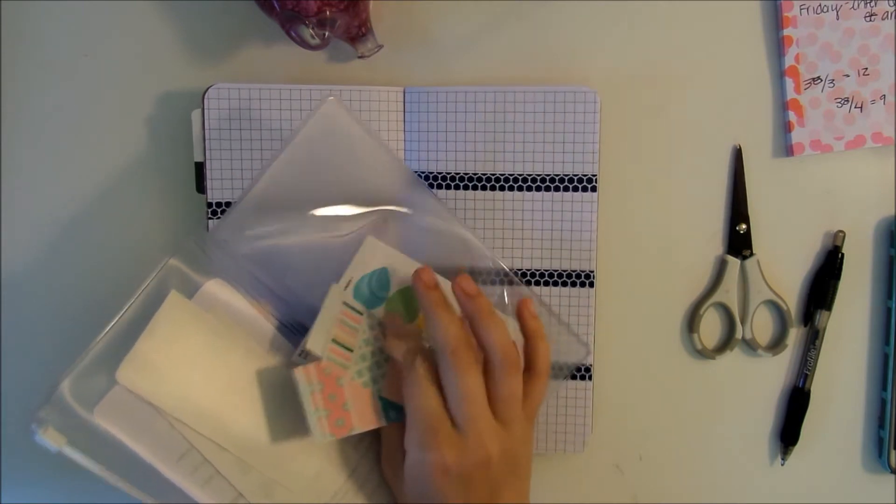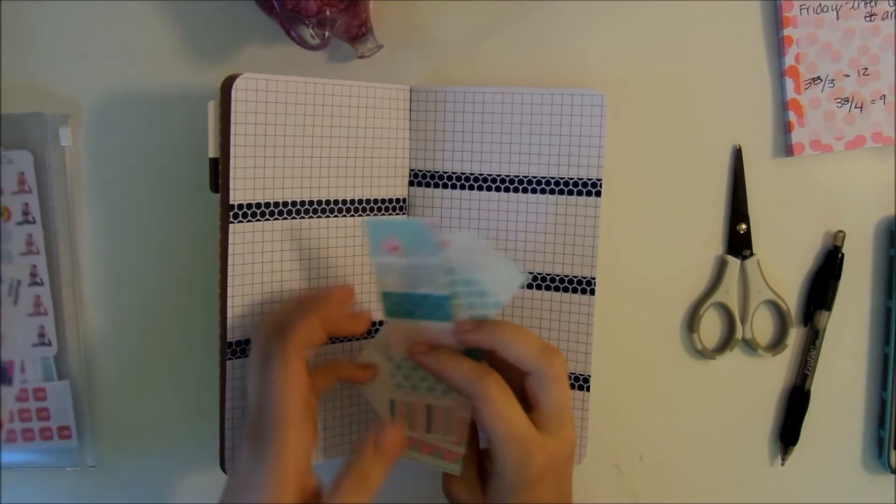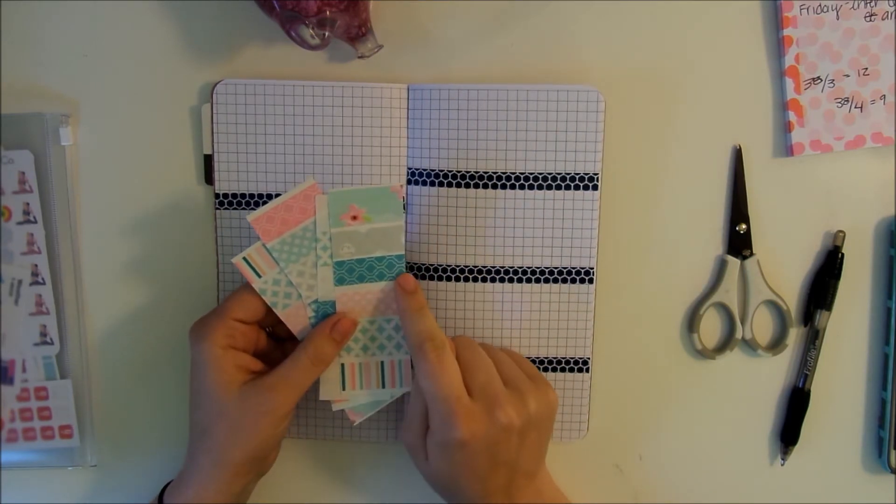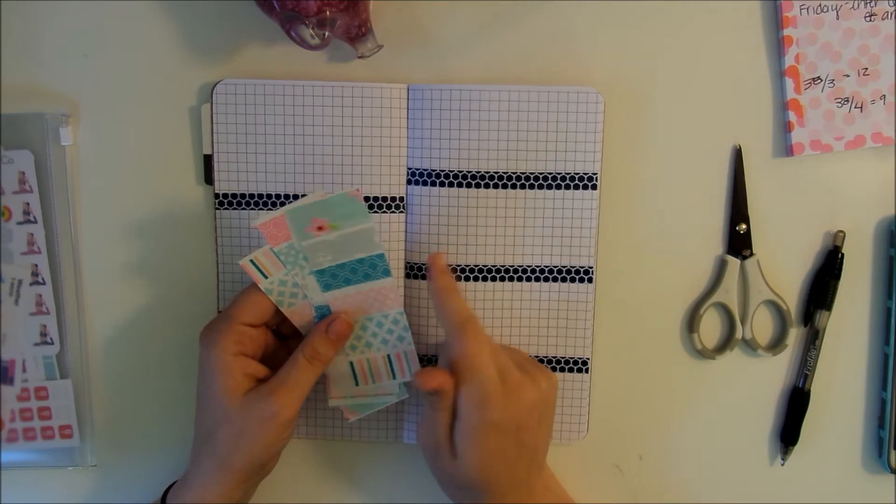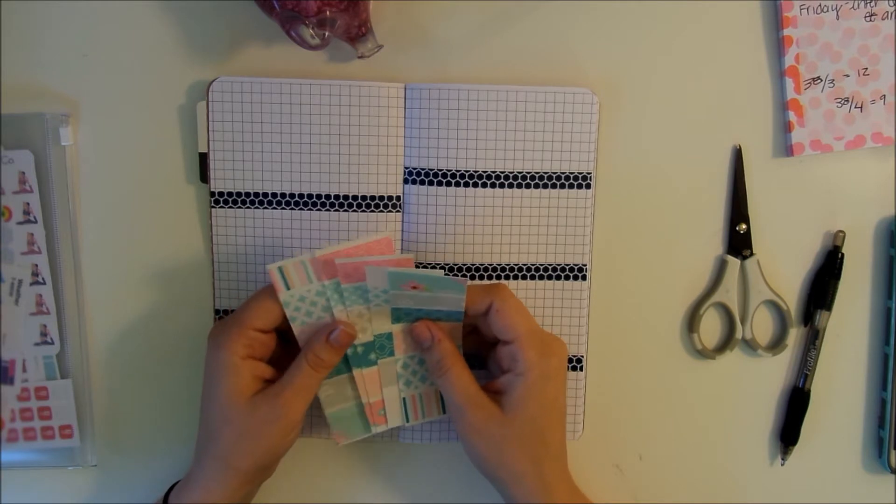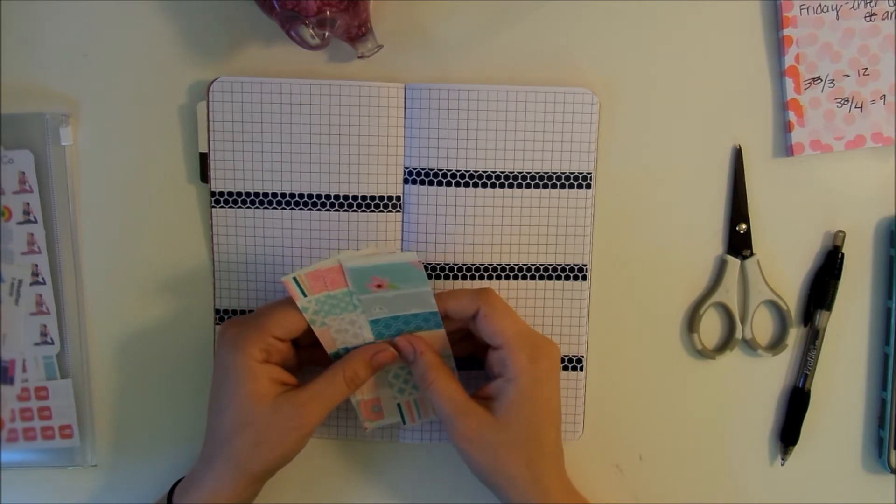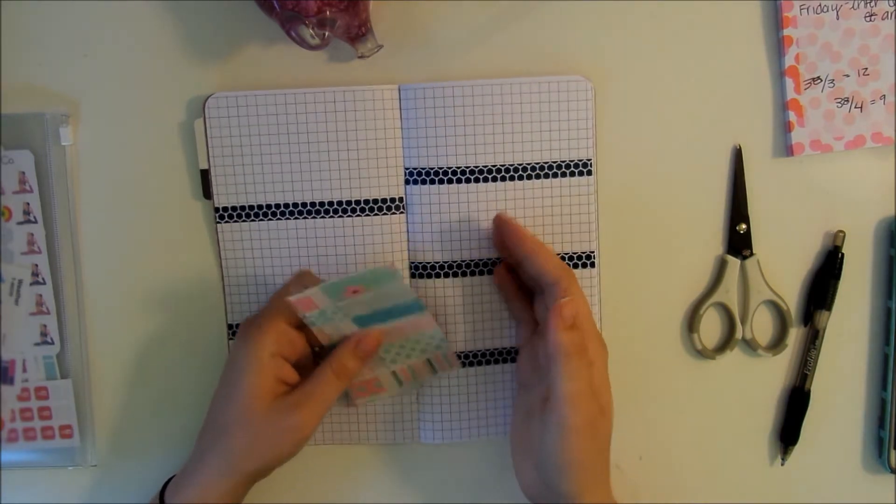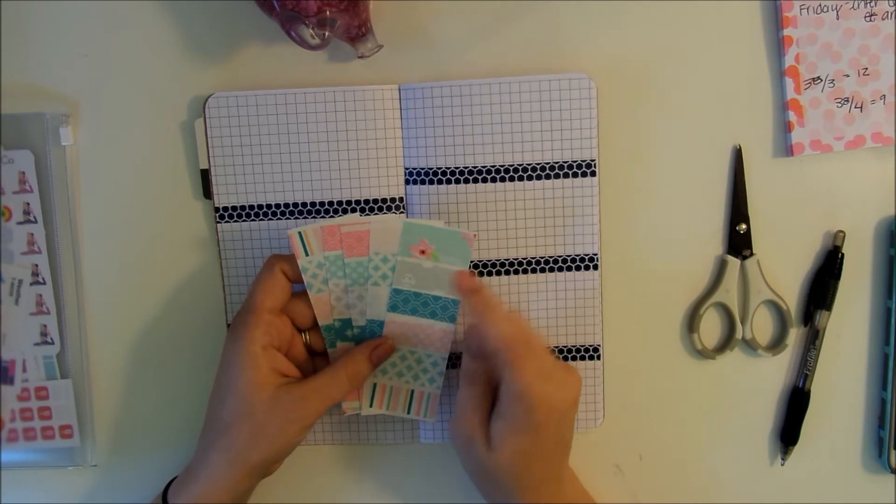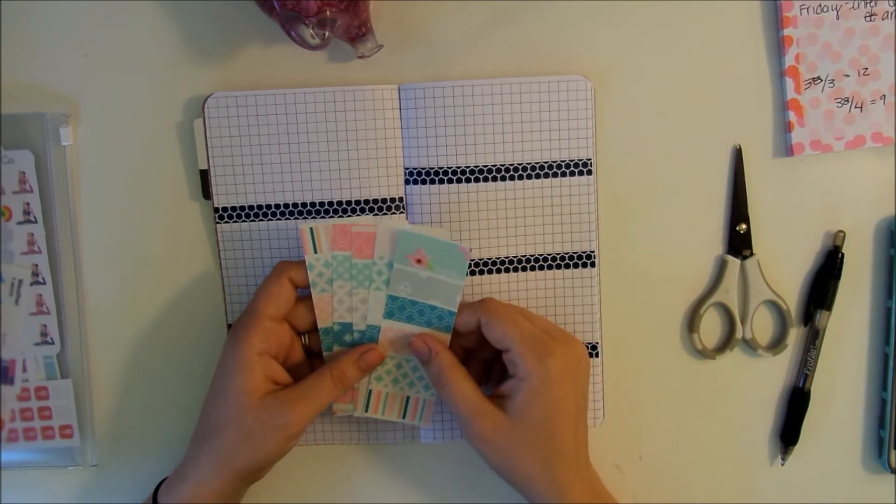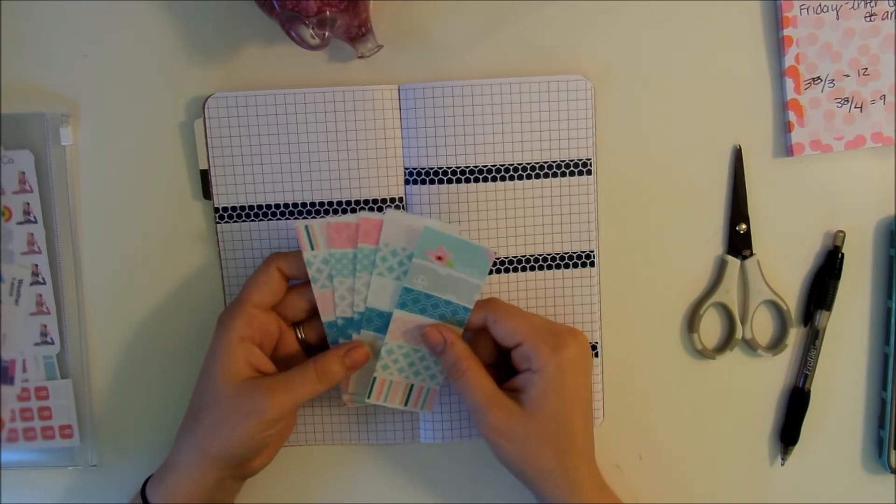I have these washi strips. I cannot remember where I got these, but they are just pieces of washi that have been cut down to a one and a half length wide. You can make them yourself just on wax paper and cutting them to the size that you want. I actually have a video about it. I use laminating pouches and then I ran it across, but I do suggest using wax paper instead because they peel off much nicer. I'll go ahead and link that video below if you want to know how to make these.